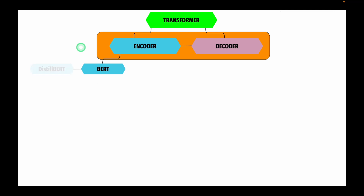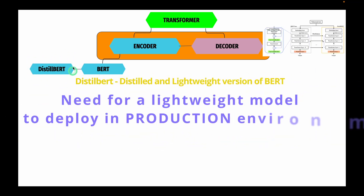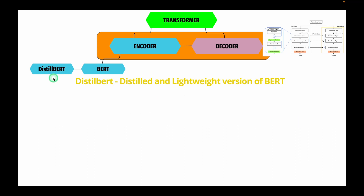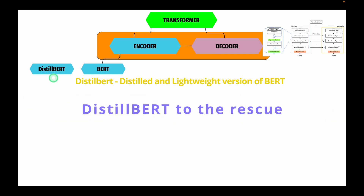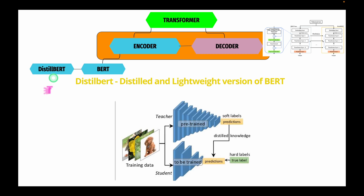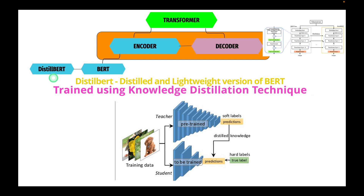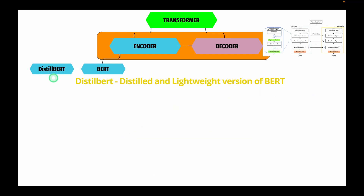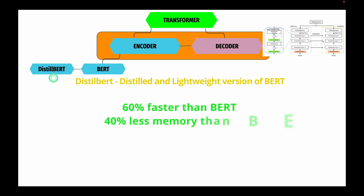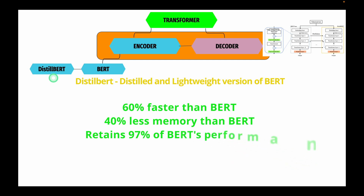The next encoder-only model is DistilBERT. BERT outperformed many state-of-the-art architectures but the industry needed a lightweight version of BERT to deploy in production environments. This gave rise to DistilBERT, which is a distilled version of BERT trained using the knowledge distillation technique. DistilBERT is 60% faster than BERT and its memory footprint is 40% less, while maintaining 97% of BERT's performance in terms of accuracy.